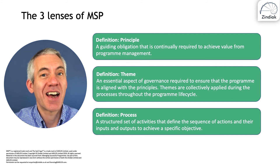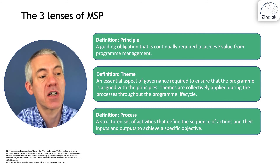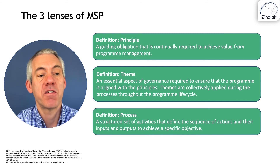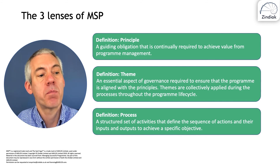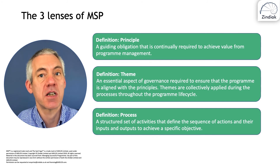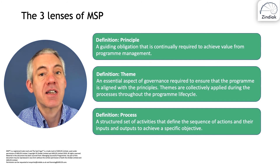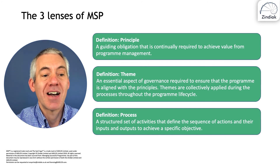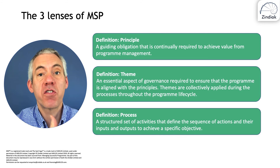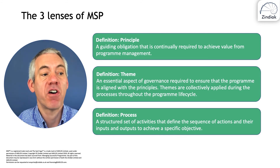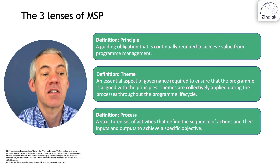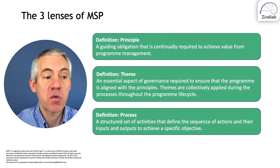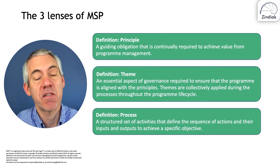We'll delve into that in more detail when we cover the themes. Finally, a process is a structured set of activities that define the sequence of actions and their inputs and outputs to achieve a specific objective. Processes differ from principles and themes in that they are a sequence — we move through them in a defined order, each with inputs and outputs designed to achieve a specific objective.